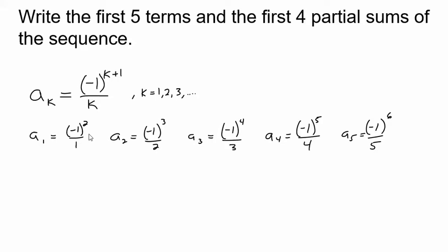Let's see what we've got here. So we've got 1 and this is going to be negative 1 over 2. Then we have positive 1 over 3 and negative 1 over 4 and then positive 1 over 5 and we could see how this would continue.